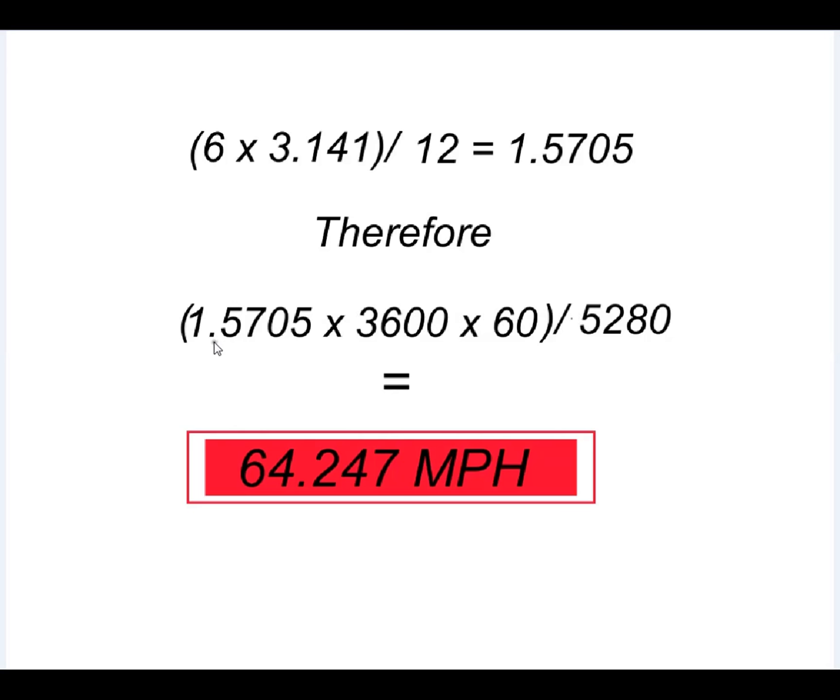Therefore, take that 1.57 feet, multiply it by the standard RPM of a standard cutter grinder, which is 3,600. It's going to give you the footage you've elapsed in one minute. Take that, multiply it by 60 minutes, and you get a very large footage number.